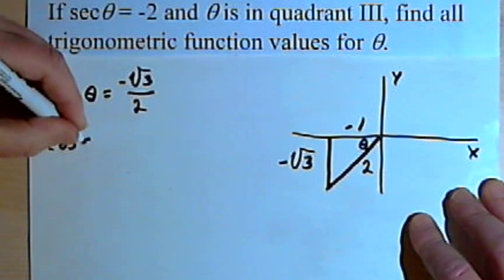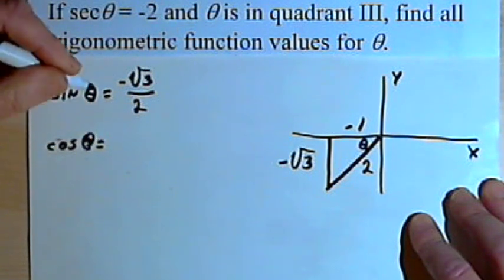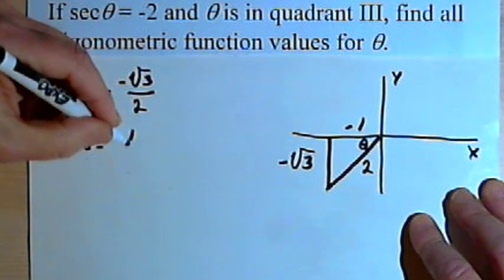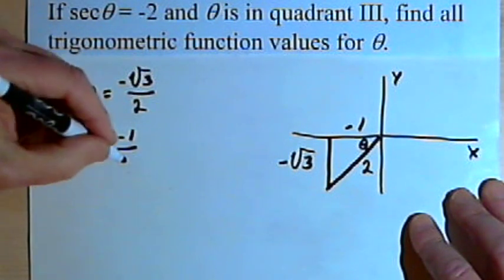The cosine of theta is going to equal the adjacent side, that's negative 1, over the hypotenuse, which is 2.